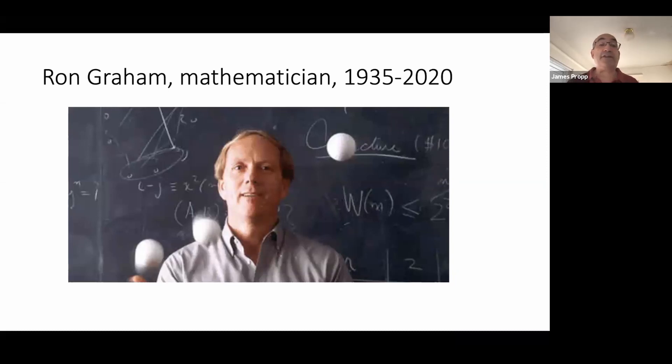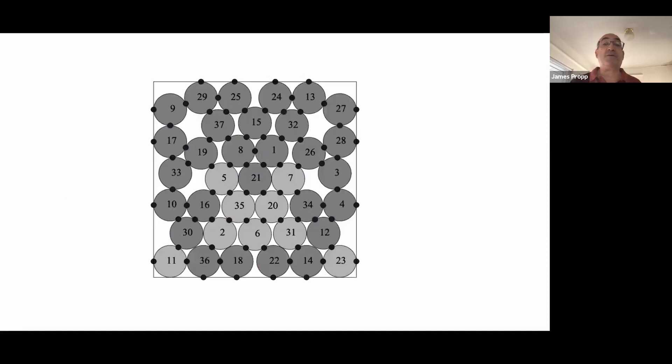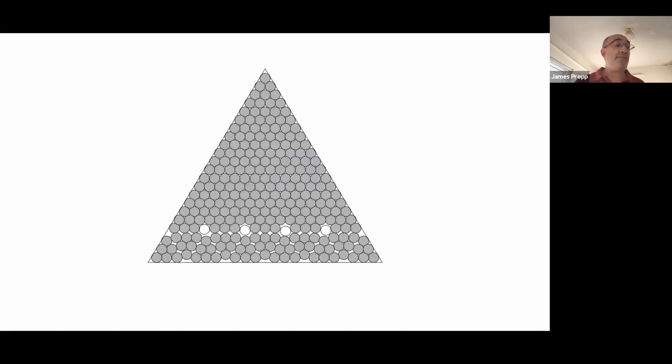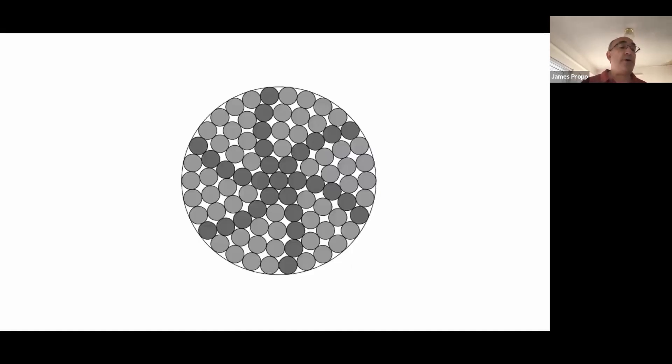For instance, he looked at efficient packing of disks in a square, and disks in a triangle, even disks in a disk. One of his favorite packing problems was packing squares in a square. Martin Gardner wrote about this in his column in 1979.